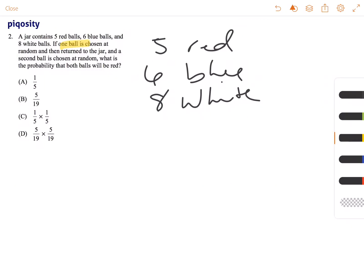If one ball is chosen at random, then returned to the jar, and a second ball is chosen, what is the probability that both of them are going to be red?